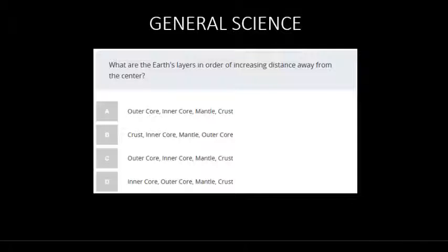D is the dead giveaway. If we are in order of increasing distance away from the center, we've got to start at the inner core. D is the answer because it lists: inner core, outer core, mantle, crust. If you've studied geography or geology, one of those sciences concerns the layers of the Earth.